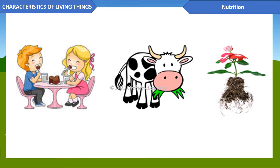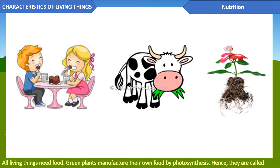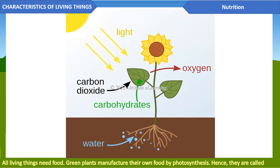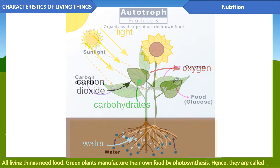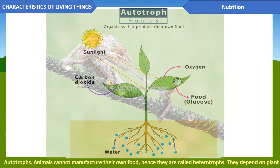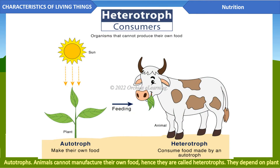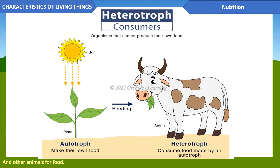Nutrition: all living things need food. Green plants manufacture their own food by photosynthesis; hence they are called autotrophs. Animals cannot manufacture their own food, so they are called heterotrophs — they depend on plants and other animals for food.